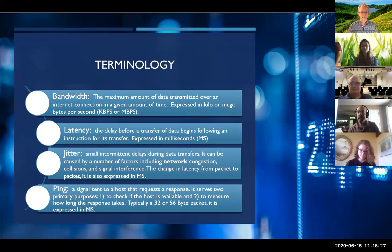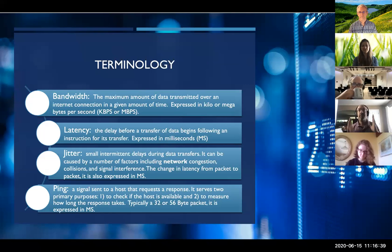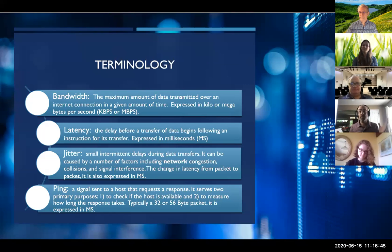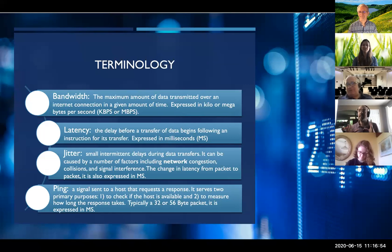Some basic terminology. Bandwidth, in terms of an analogy — I work in Los Angeles a lot — bandwidth is the number of lanes available. A seven-lane highway has a lot of bandwidth. It's the amount of room available to move information, but that doesn't necessarily mean it's going fast. You can sit in seven lanes of traffic for a very long time.